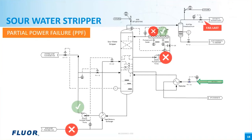Typically, power to pumps and fans is supplied by two independent substations — bus A and bus B. The consequence of one substation failure, either bus A or bus B, has been analyzed. The worst case scenario, which is the bus B failure here, is taken as the partial power failure upset event.